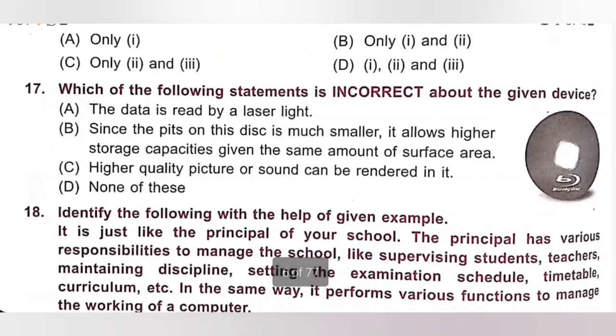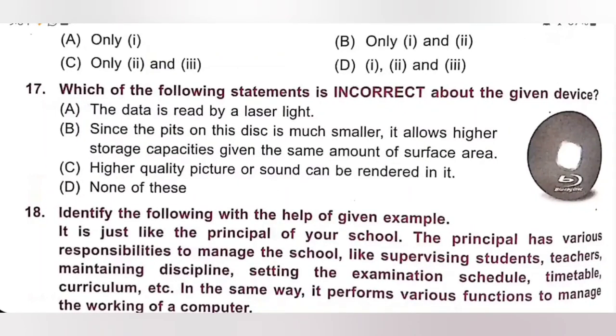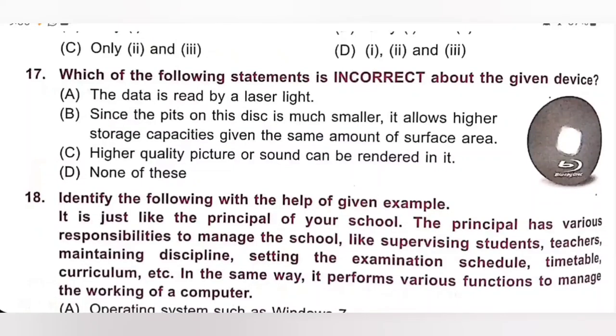17th. Which of the following statement is incorrect about the given device? A. The data is read by a laser light. It is a correct statement. Actually, we need to select the incorrect statement about the given device. B. Since the pits on this disk are much smaller, it allows higher storage capacities given the same amount of surface area. It is correct.